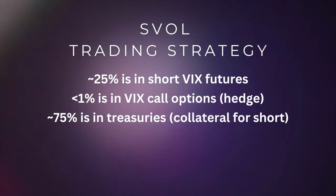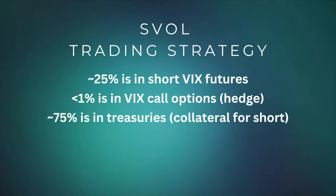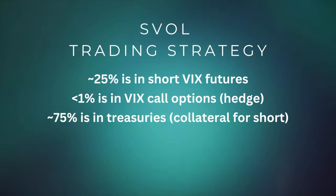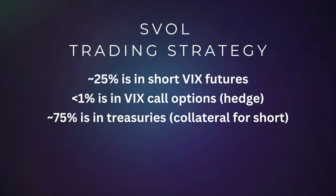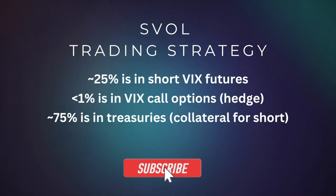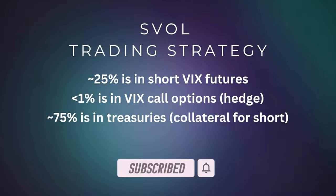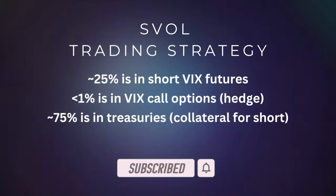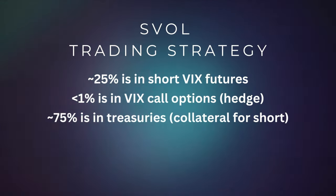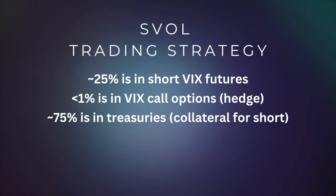SVOL's trading strategy is that only 25% of the holdings are in short VIX futures. This is because you don't want to expose your investors to too much risk, so that's why only 25% is in short VIX futures. No more than 1% is in VIX call options, which are used as a hedge.